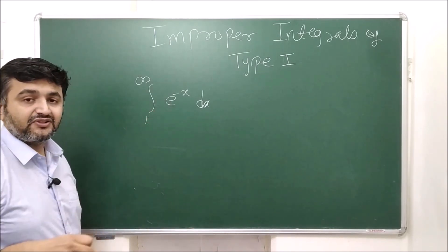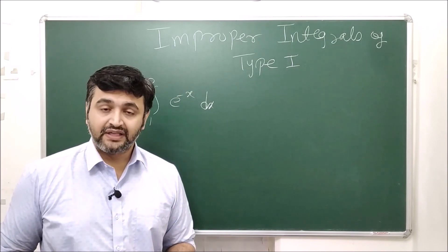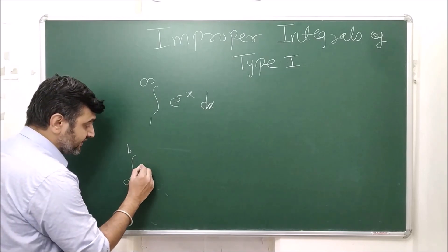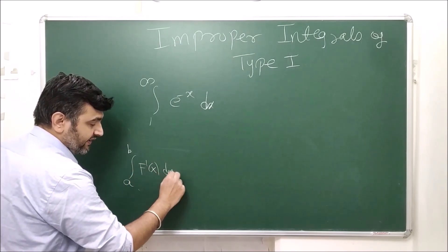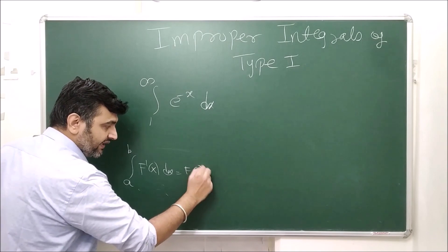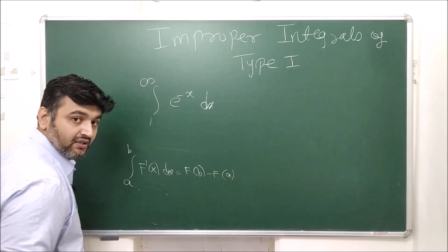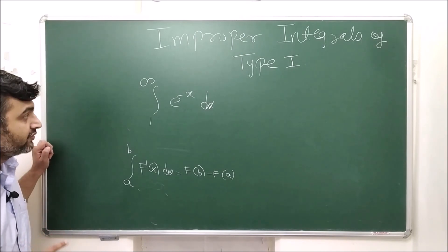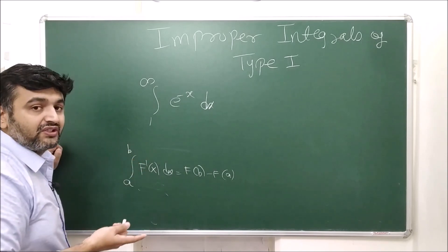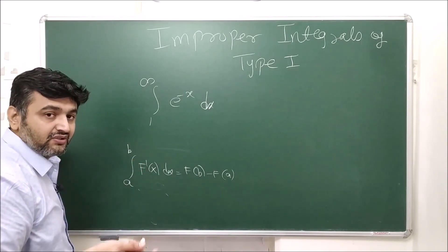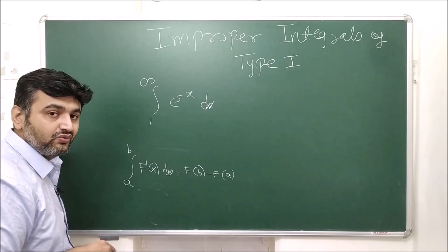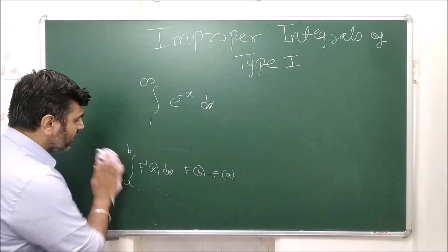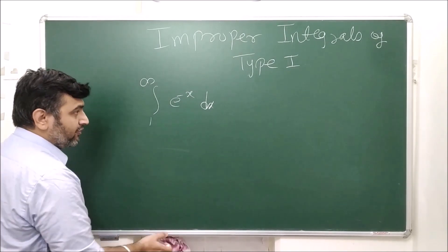So writing e^(−∞) directly is the first mistake. Also, recall FTC2: it applies when you have a closed and bounded interval and the antiderivative exists — giving f(B) − f(A). Here the domain is not closed and bounded, and infinity is not a number, so applying FTC2 this way doesn't make sense. That's the mistake, but it's okay — it happens.